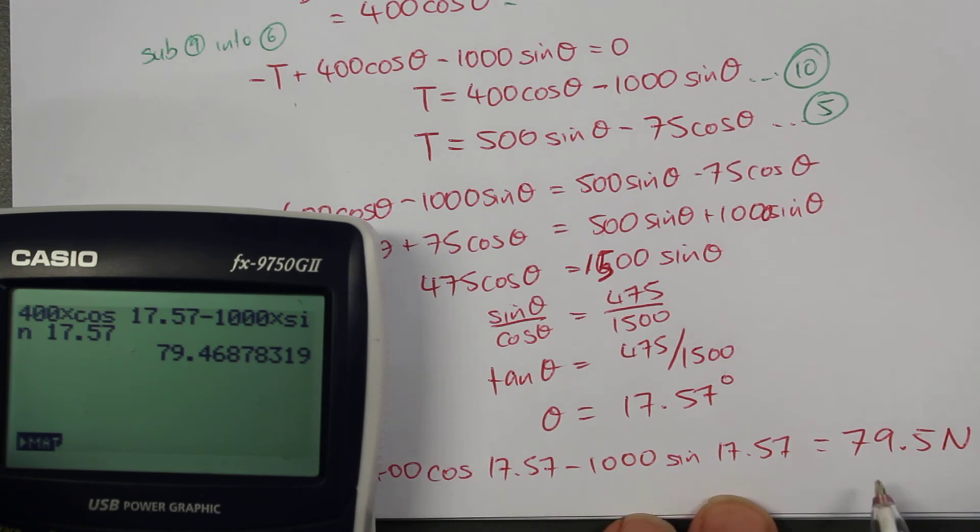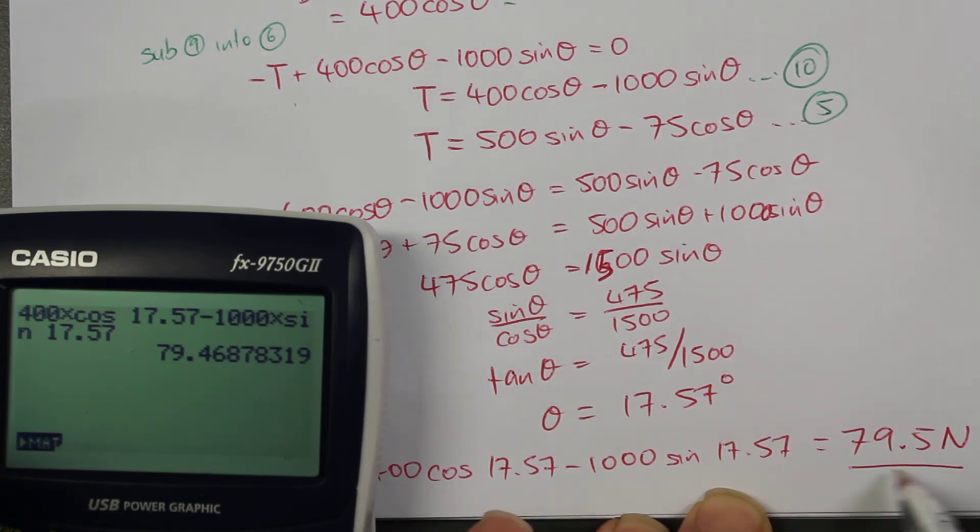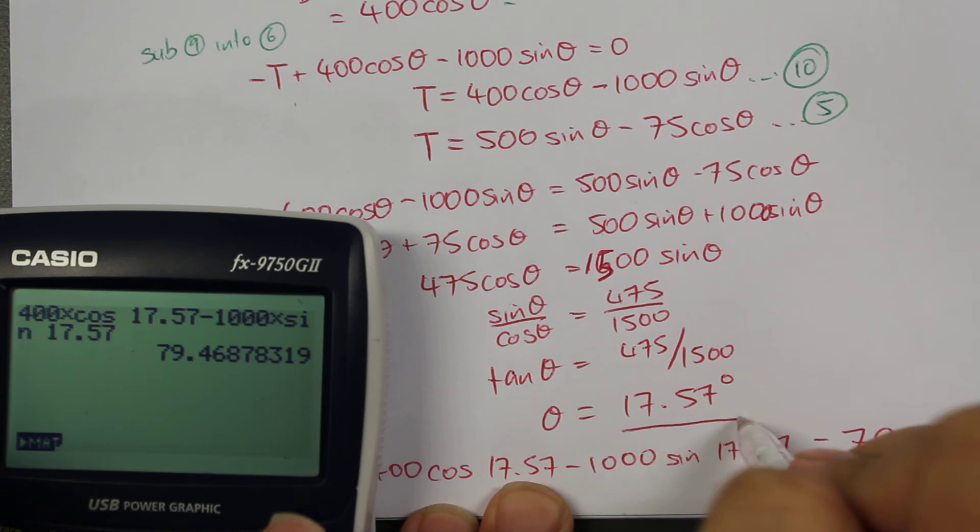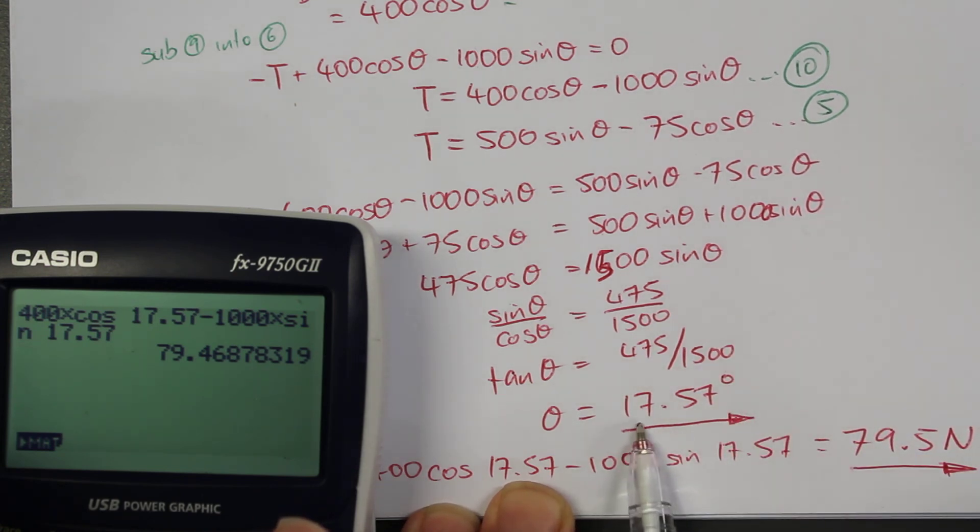This gives us an answer to the tension which is in the rope. The tension within the rope will be 79.5 newtons, and the angle where both blocks will begin to slip will be 17.57 degrees. So hopefully that's been helpful for you, and I'll see you all in the next video. Thanks for watching.